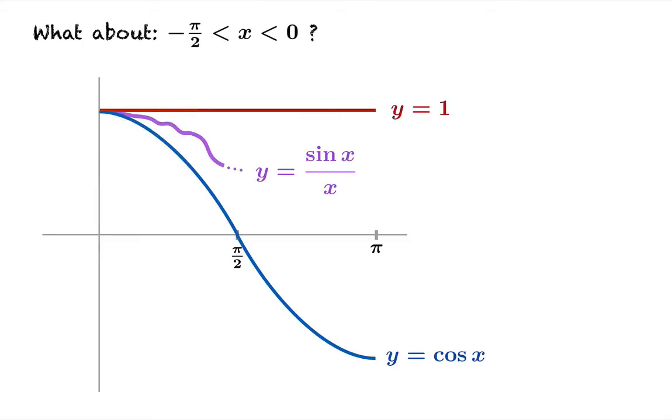Now we seem to have done a lot of work to find the limit of sine x over x as x approaches zero from the right. What about from the left? So we're going to take a look at arguments between negative pi over two and zero. How can we do this efficiently?